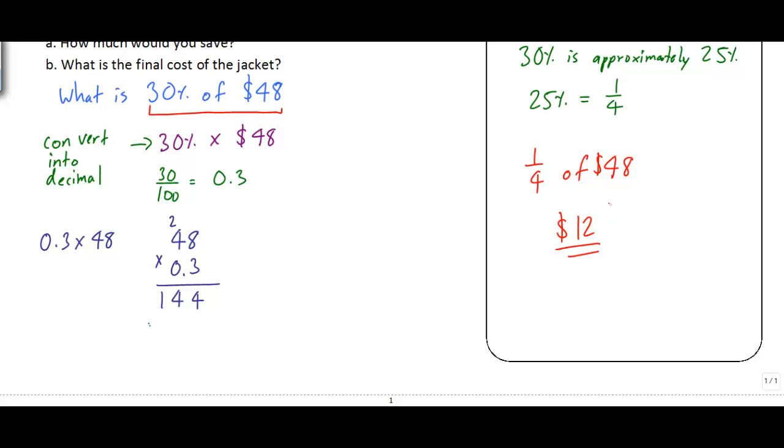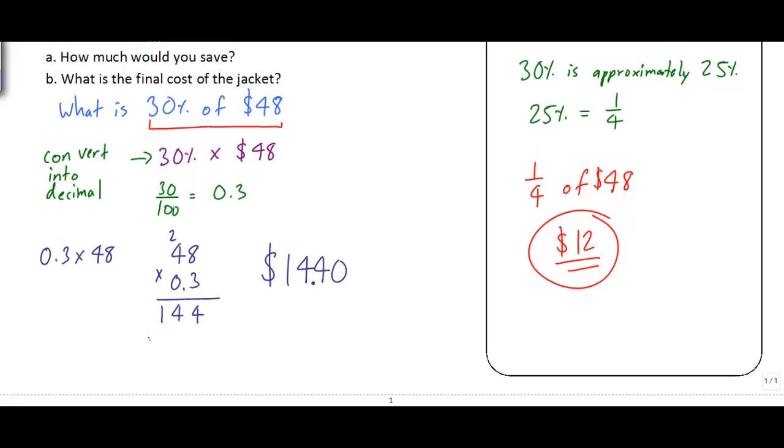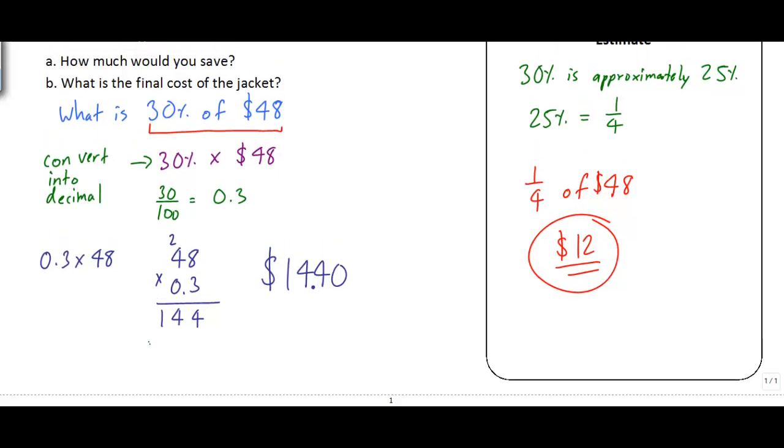The only question is where do I put this decimal point? Well, if I look over here at my estimate, my estimate is around $12. So if 144 is what I came up with, it makes the most sense to put my decimal point right here. And so that would be $14.40. Now that's the first part of the question, how much we save. So this is really the answer to part A.